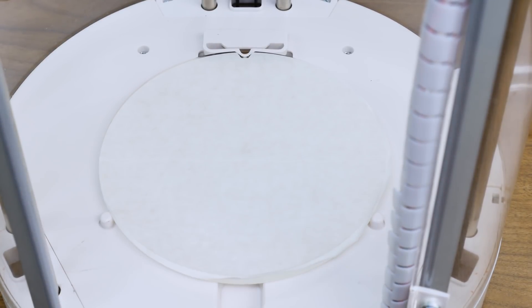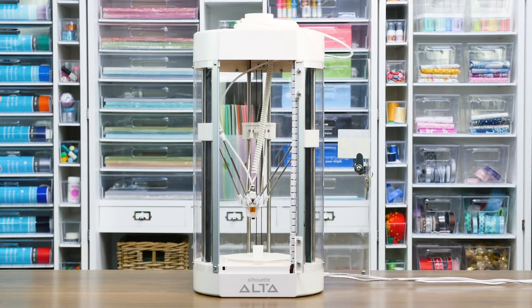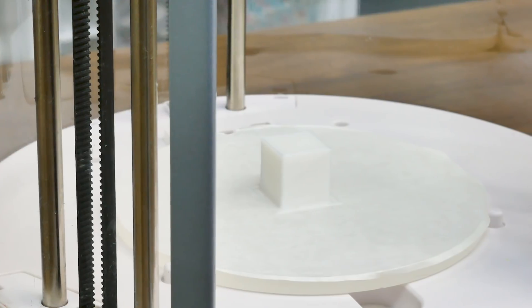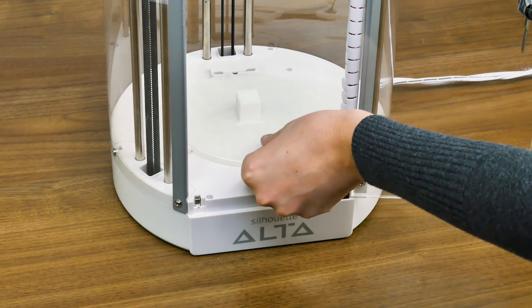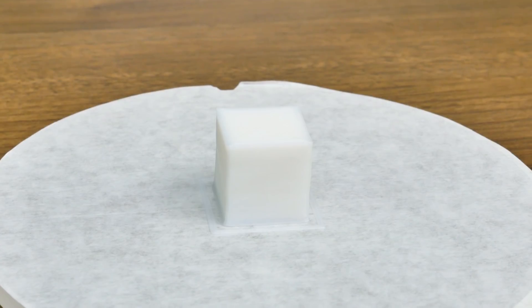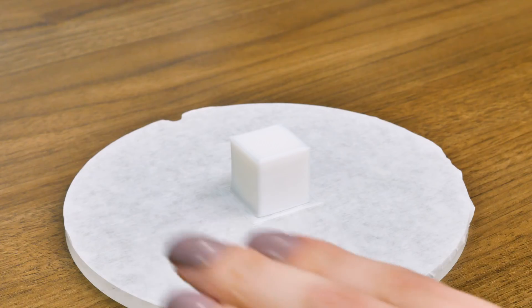When your machine is done printing, wait a few minutes for the filament to cool completely, then remove the platform from the inside of the printer. Take your spatula tool and gently slide the spatula under the object to remove it from the platform tape.